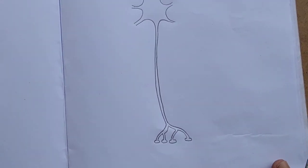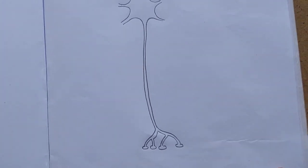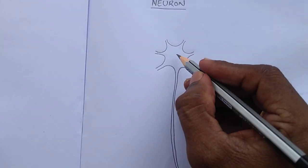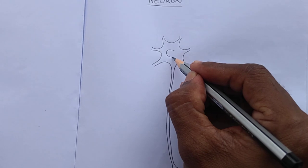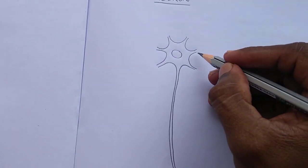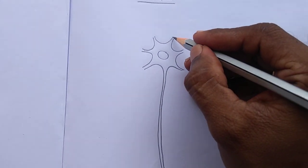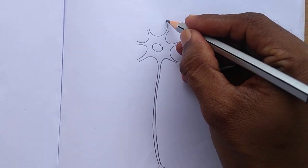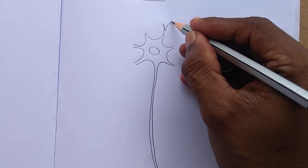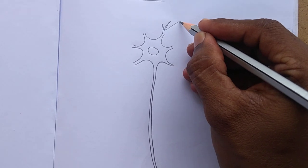Like this synaptic knobs. After this we have to draw a big nucleus inside the cyton, and from these we have to draw that branches called dendrites like this.